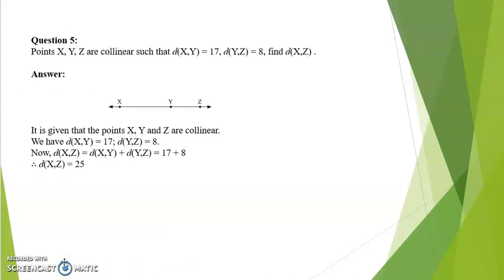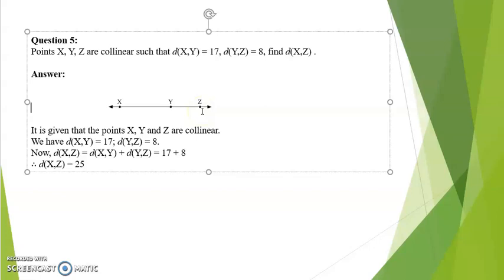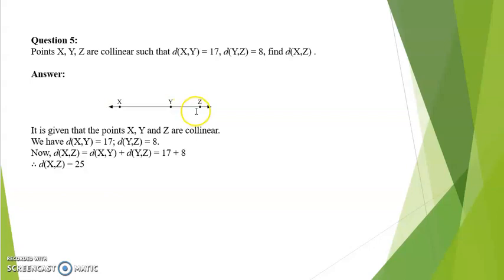Question number 5. Points X, Y, Z are collinear, such that distance XY is equal to 17, distance YZ is equal to 8. Find distance XZ. Since the three points are collinear, distance XZ would be the addition of both: 17 plus 8. The answer is 25.